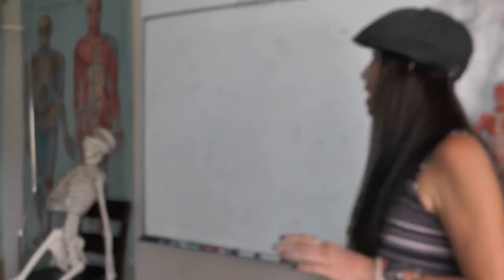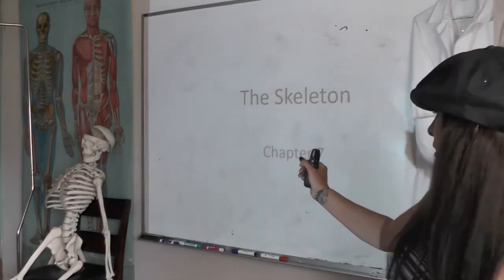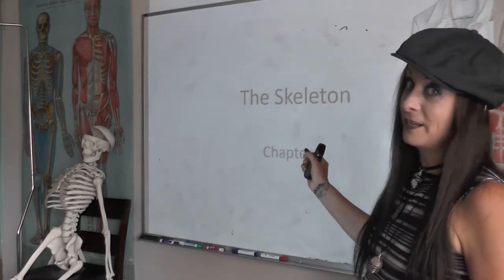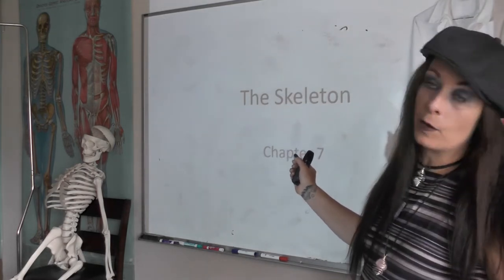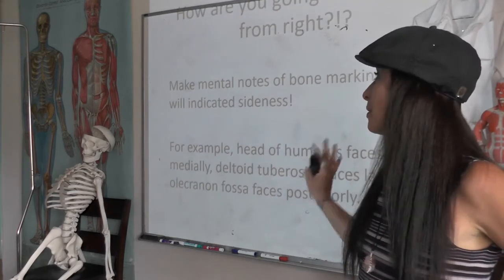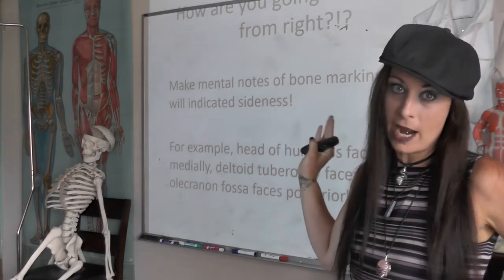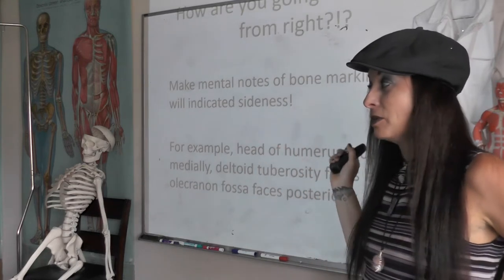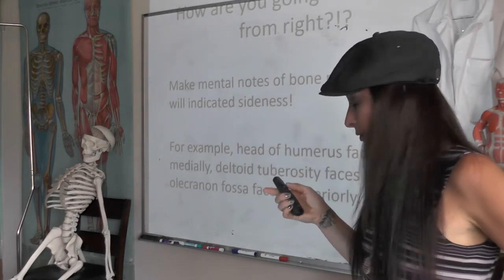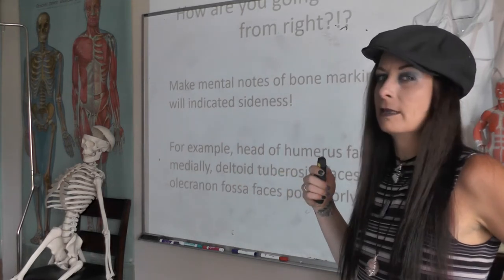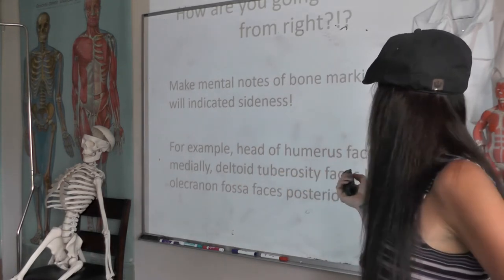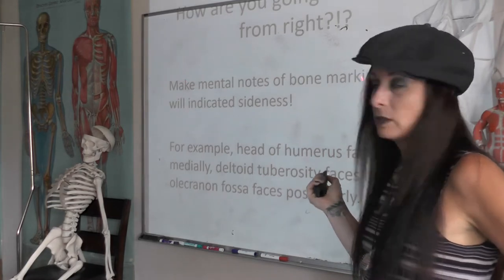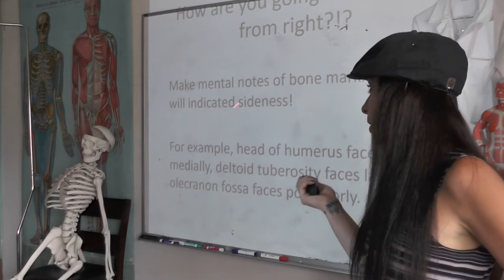Let's quickly talk about the divisions of the skeleton. A couple things to be aware of: you have to be able to identify left from right on many of the bones, and you're going to have to do that from a picture from my living room or from wherever the lab assistant may take it. You're going to make mental notes of the bone markings that indicate sidedness. The lab assistant will probably help you do that later.